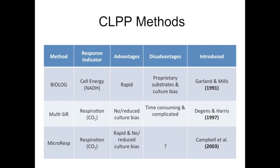There are a number of ways to measure CLPP. The earliest is the Biolog method, which has been around since about 1991. It was originally adapted for identifying single strains of microorganisms, and then Garland and Mills decided it could be used in an environmental ecosystem context. It's rather rapid, but it has a few issues: some proprietary substrates, and there's always the potential for culture bias — you're missing a large portion of the microbial community, only seeing what lives on the substrate under certain conditions.